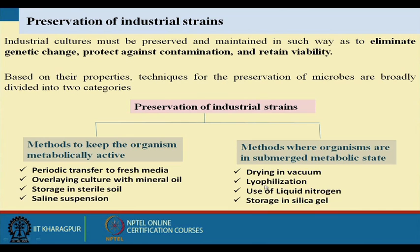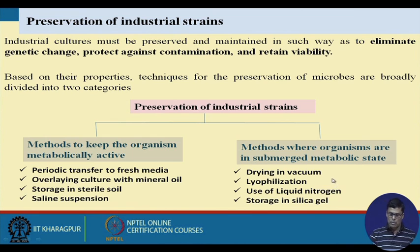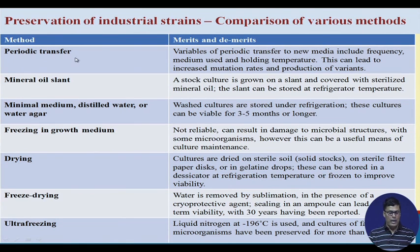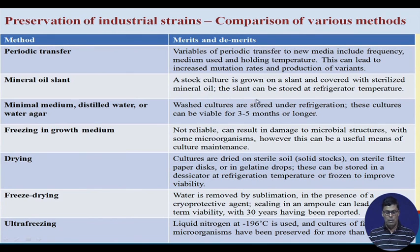Other preservation methods include storage in liquid nitrogen and storage on silica gel. For periodic transfer, the frequency of media use and holding temperature can lead to increased mutation rate and production of variants. The mineral oil slant method involves growing stock culture on a slant, covering it with sterilized mineral oil, and storing it at refrigerated temperature.